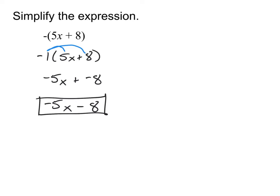Now some of you might be wondering: do I really have to write out the step with the negative 1? No, you don't have to. I just wrote that there so you could be reminded about what it really meant. You might also wonder if you have to write it first as plus negative before going to minus 8. You could also just go straight to minus 8 in the end — I just want to make it clear why we get there by drawing that extra step out.